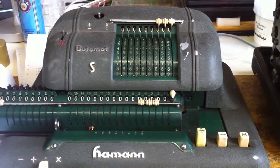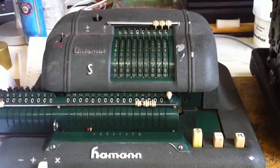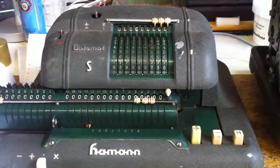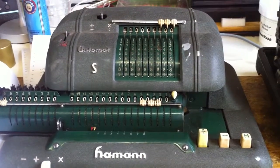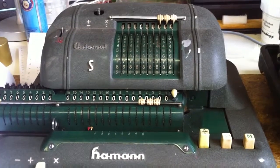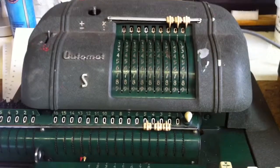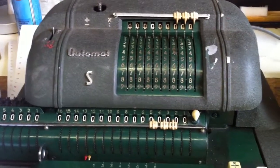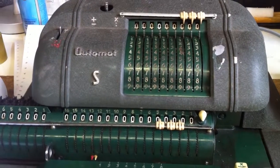After a bit of cleaning, this machine from 1954 works reasonably well. Let's make a division and try to divide 22 by 7.